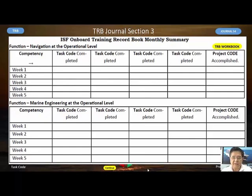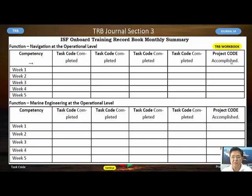The form has six columns. Column one is the competency that you completed, and the last column is the project code. Weeks one through five are used so that no day in a month is left without an assigned week. This format applies to both deck and engine so that two separate videos are not needed.